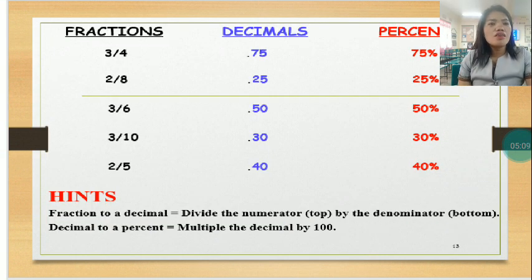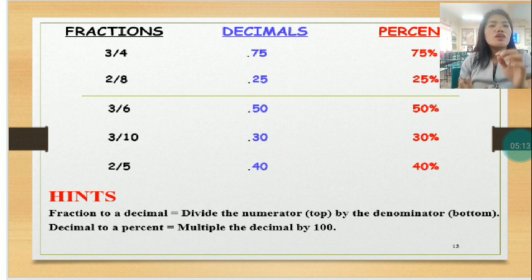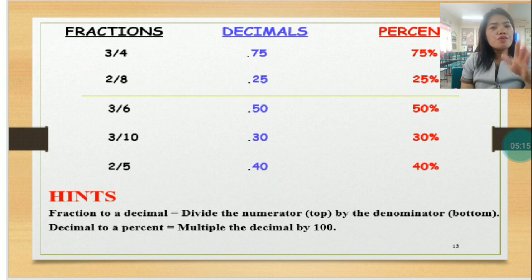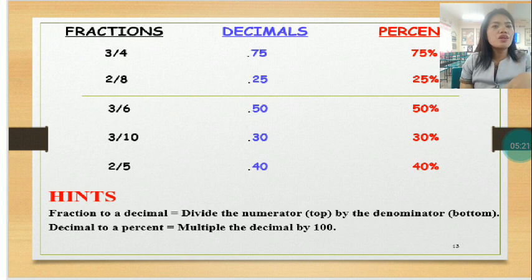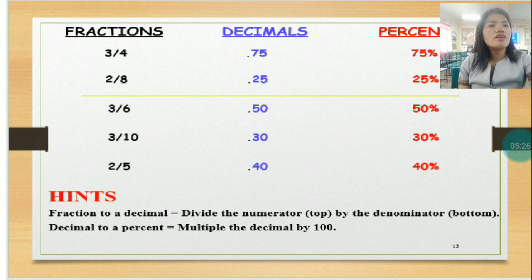Let's have here an example. We have three columns for the fractions, decimals, then percent. For fractions, if you have three-fourths, the decimal equivalent will be 0.75, and the percent equivalent will be 75%.